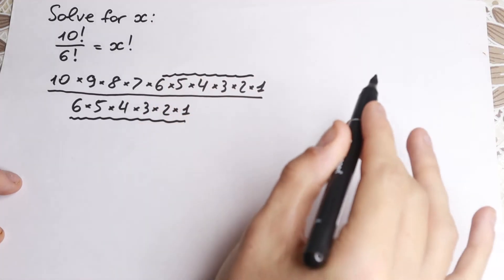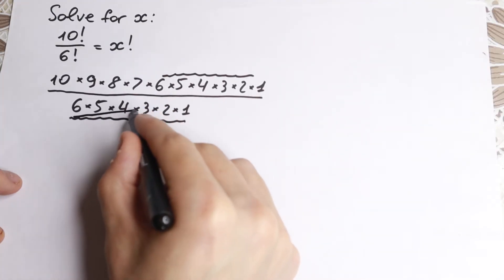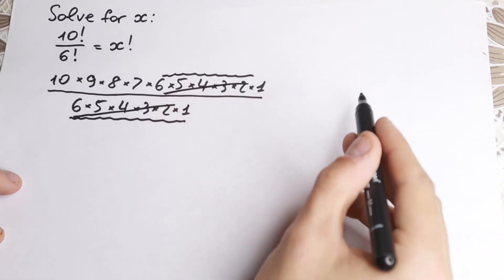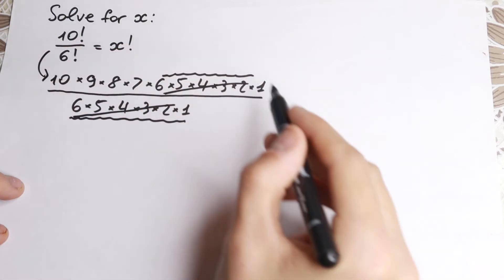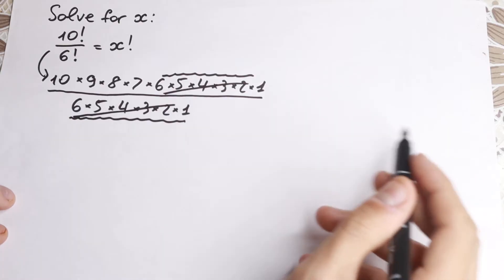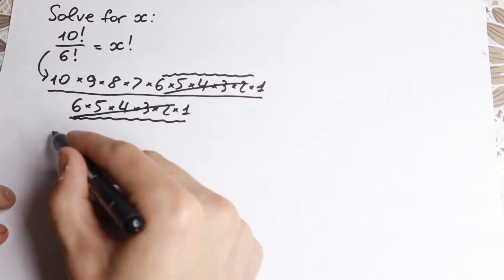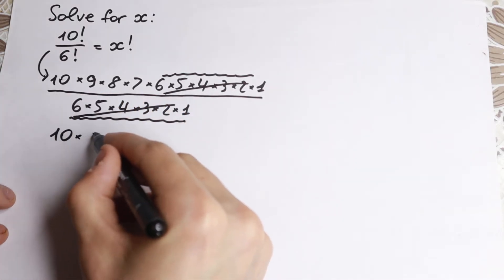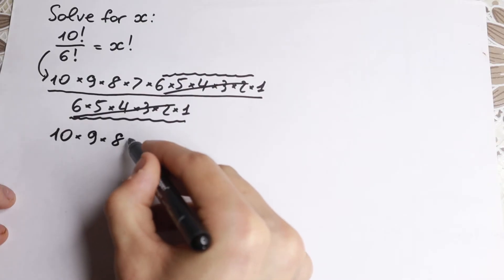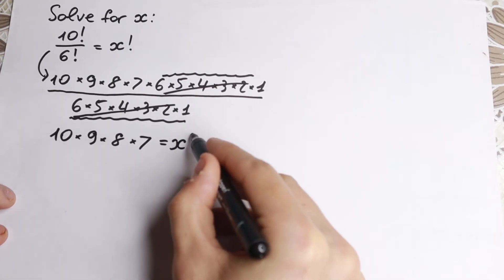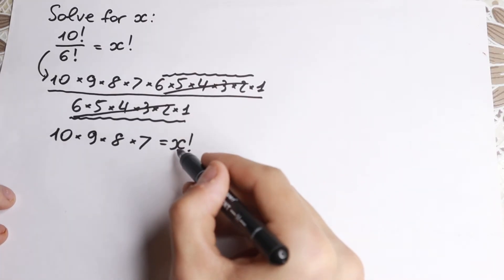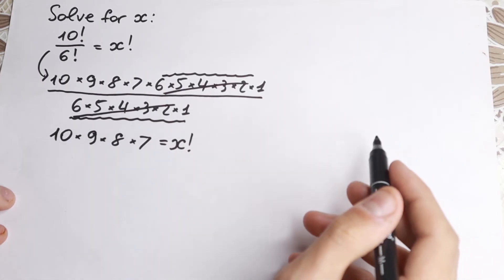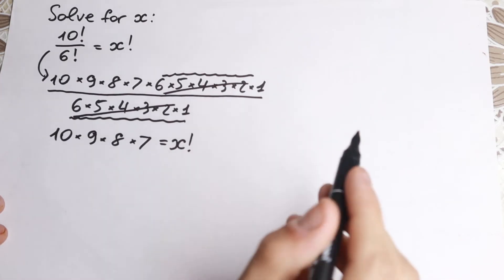So we can easily cancel this. This is a multiplication all the time. So we cancel this expression. We can easily do it. But this is our left hand side. On the right hand side, we have x factorial. So we need to work with this x factorial. So we still have 10 times 9 times 8 times 7 equal to x factorial. It's kind of a weird equation because we're used to solving with x, but here we have x factorial.